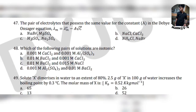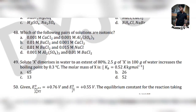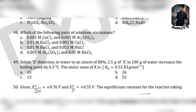Question 49 is number-based: solid X dissociates in water to an extent of 80%. 2.5 g of X in 100 g of water increases the boiling point by 0.3°C. Kb = 0.52 K·kg/mol. Options are 65, 26, 13, and 52. The sequential options suggest the second largest number, which is 26, so the answer is option B.